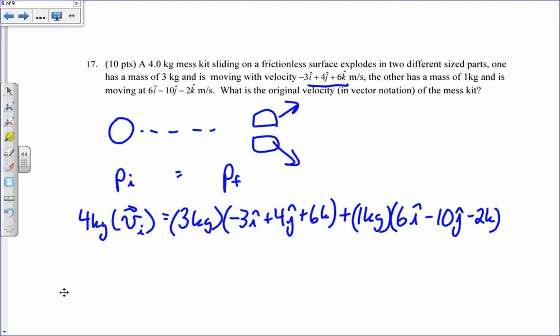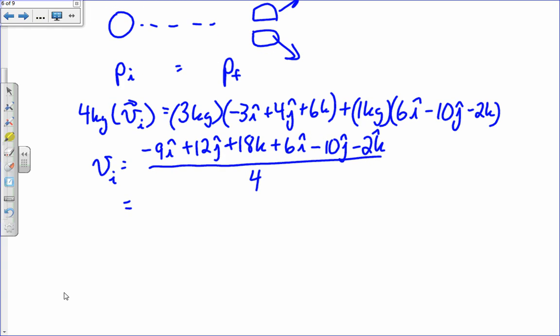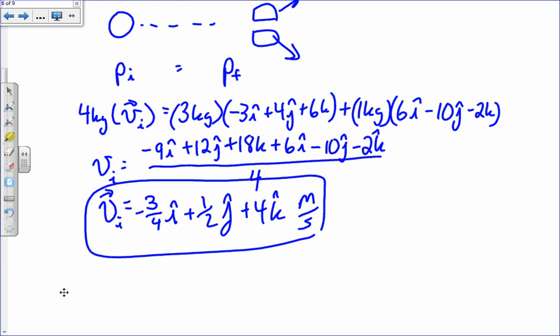I can combine my i and j terms, distribute the 3 and the 1 through the vectors, and I get vi equals negative 9i plus 12j plus 18k, plus 6i minus 10j minus 2k, all divided by 4. Add like i, j, and k terms, and divide by 4. And I get vi in vector notation is negative 3 quarters i, plus a half j, plus 4k. That's in meters per second. Many of you got that correct. Basic momentum problem.